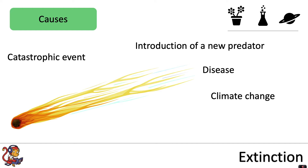Climate change is a major contributor to extinction and this is all driven by human activity through things such as releasing carbon dioxide by burning fossil fuels. A lot of this is causing extreme weather events in different places across the planet, but also a general global rise in temperature.